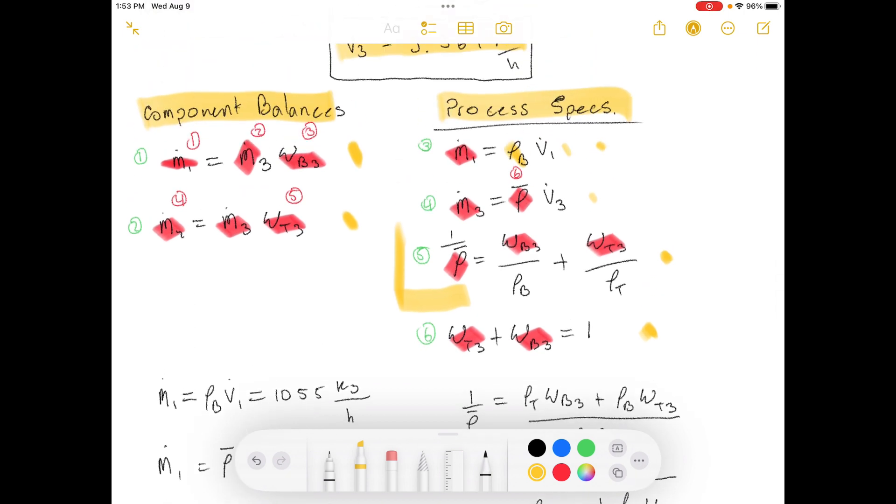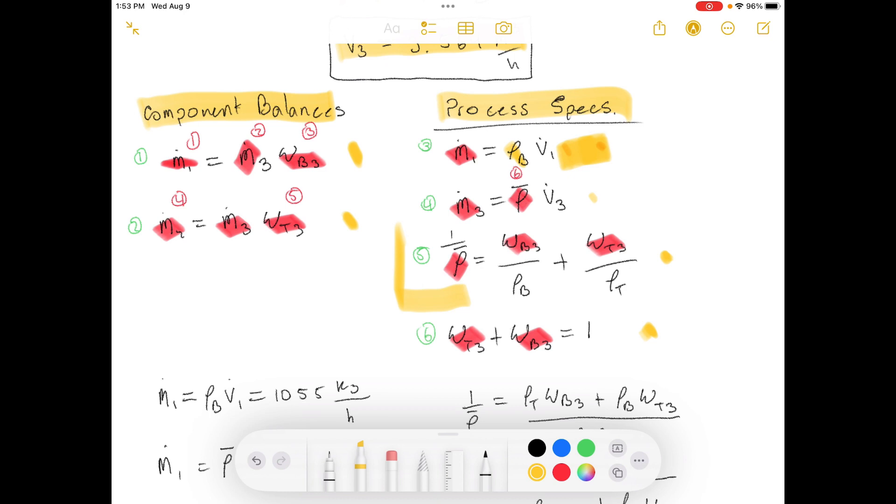So, which one of these will be the easiest to solve for an unknown? This one right here, because it only has one unknown. The rest of these are known. So, we can calculate what the mass flow rate of stream one is pretty easily. So, that's what that equals.